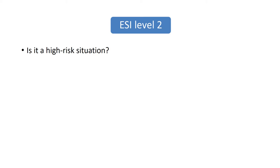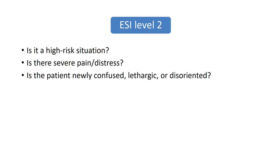Once you've determined your patient is not a Priority 1, ask yourself these questions. Is the patient in a high-risk situation? Is there severe pain or distress? Or is the patient newly confused, lethargic, or disoriented? This is where you have to listen to the patient's chief complaint, observe how they present to you, and use your nursing judgment. For example, if a patient complains of chest pain and is diaphoretic, he or she may be in a high-risk situation. Also, if a patient's family member complains their loved one is newly confused, you have to think of the worst things new onset confusion can represent. If you've determined the situation is not one of high risk, there is no severe pain or distress, or no new onset of confusion, lethargy, or disorientation, move on to Priority Level 3.